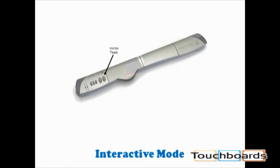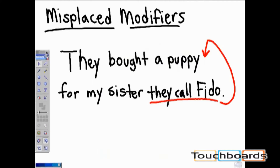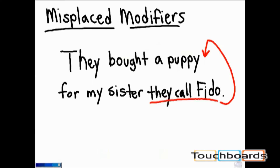When in interactive mode, the top button on your bar serves to open and close your Mimeo tools. When I press the top button, the Mimeo toolbar will close. When I press it again, the Mimeo toolbar will open.